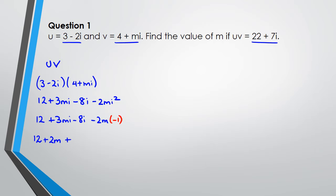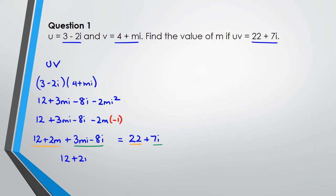So I get 12 plus 2m plus 3mi minus 8i. I know that u times v equals 22 plus 7i, so the real part is 22. On the left-hand side the real part is 12 plus 2m, and the imaginary part is 3m minus 8. Using the real part: 12 plus 2m equals 22, so 2m equals 10, and m equals 5.